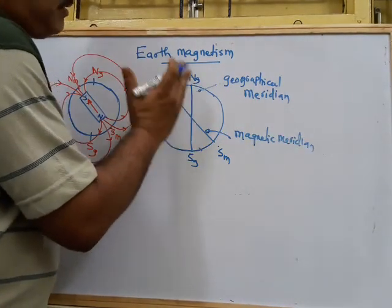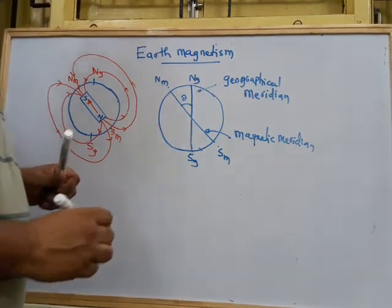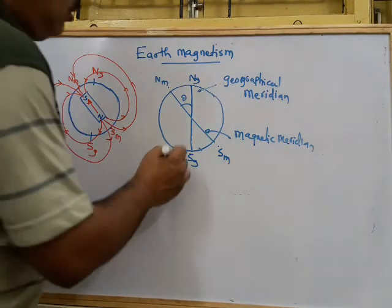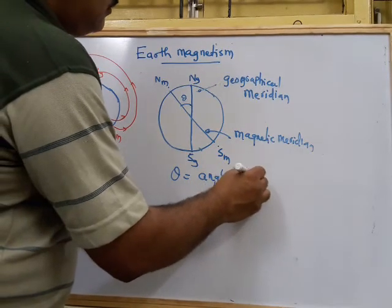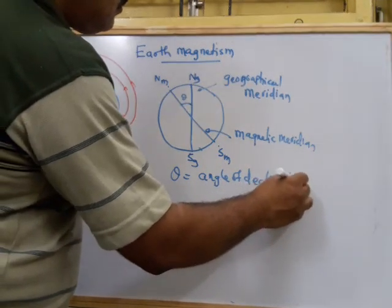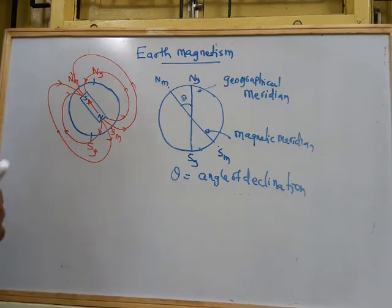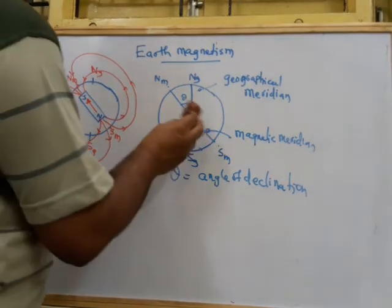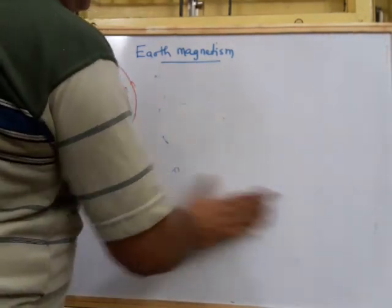The magnetic meridian and geographical meridian are two vertical planes. The angle between these two planes is called the angle of declination — denoted by theta. This angle theta is known as the angle of declination.